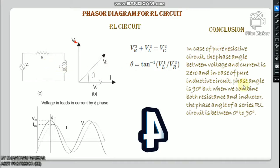In conclusion: in case of a pure resistive circuit the phase angle between voltage and current is zero, and in case of a pure inductive circuit the phase angle is 90 degrees. When we combine both resistance and inductor, the phase angle of a series RL circuit lies between zero degrees and 90 degrees.